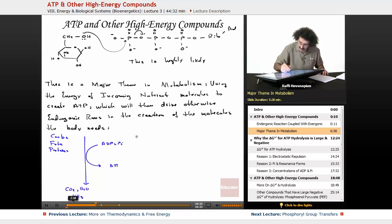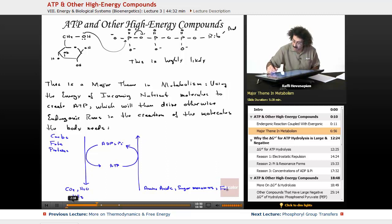Now let me go ahead and draw another arrow. This time I'll make it go up. ATP. Now we have amino acids, we have the sugar monomers, we have our basic fatty acids, and we have nitrogenous bases.